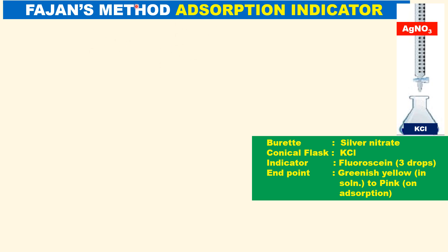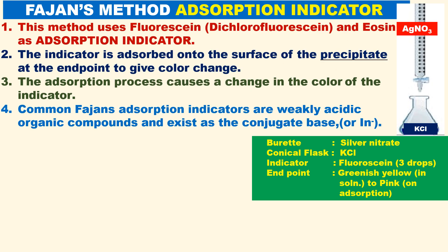Let us see the third Fajans' method. This method is known as the adsorption indicator method. This method uses organic dyes — organic colored compounds such as dichlorofluorescein, fluorescein, and eosin — as adsorption indicators. In this titration, silver nitrate is taken in the burette, and in the conical flask, potassium chloride is taken, and three drops of fluorescein indicator are added.